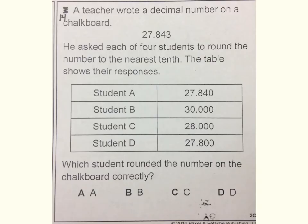Number fourteen. A teacher wrote a decimal number on a chalkboard. Twenty-seven and eight hundred forty-three thousandths. He asked each of four students to round the number to the nearest tenth. The table shows their responses. Student A. Twenty-seven and eight hundred forty-thousandths. Student B. Thirty. Student C. Twenty-eight. Student D. Twenty-seven and eight hundred thousandths. Which student rounded the number on the chalkboard correctly?